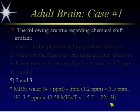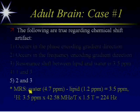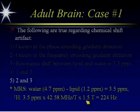That brings us to case two. This is a 27-year-old postpartum female with a history of lupus who presents with headache, nausea, and decreased mentation. Here are your first images.